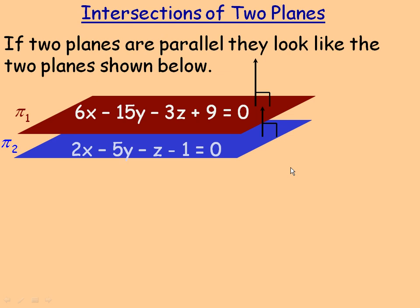In this lesson we'll take a look at how two planes can intersect or not intersect, existing together in three-dimensional space. In the example on the first page, we've got two planes that are parallel. Pi is often the symbol used to represent a plane, so we'll call the red one pi1 and the blue one pi2.